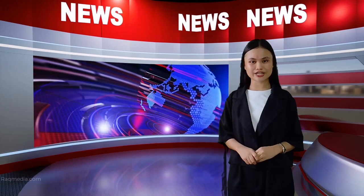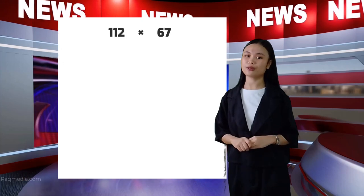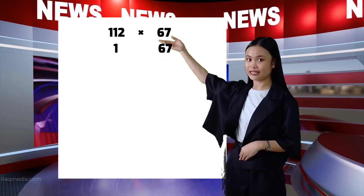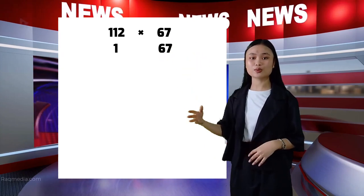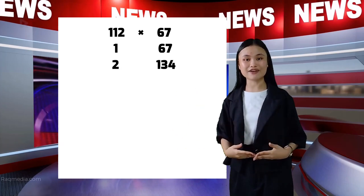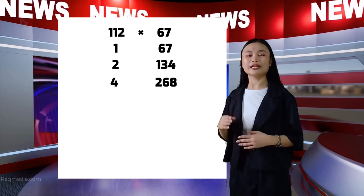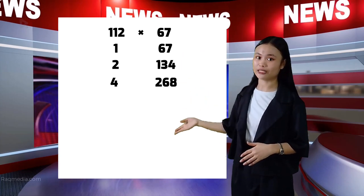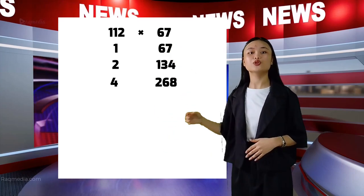So, in order to find the product of 112 and 67, always remember that in Egyptian arithmetic we will always begin at 1 in the multiplicand, then copy the multiplier. So we begin at 1 and 67, then double: 1 plus 1 is 2, 67 plus 67 is 134, 2 plus 2 is 4, 134 plus 134 is 268. We continue doubling until we find an equivalent number on the left side equal to 112.